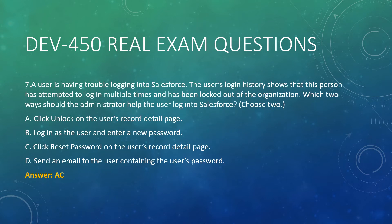Question 7. A user is having trouble logging into Salesforce. The user's login history shows that this person has attempted to log in multiple times and has been locked out of the organization. Which two ways should the administrator help the user log into Salesforce? Choose two. A. Click Unlock on the user's record detail page. B. Log in as the user and enter a new password. C. Click Reset Password on the user's record detail page. D. Send an email to the user containing the user's password. Answer: A, C.